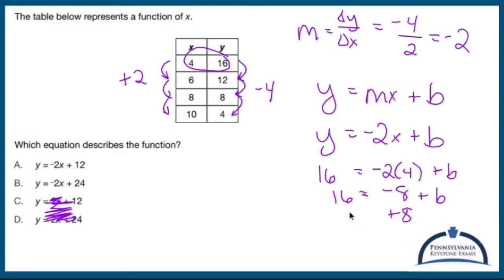Add eight, add eight, and b, oh wrong one, b is going to equal 24.